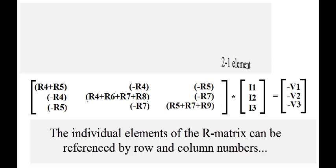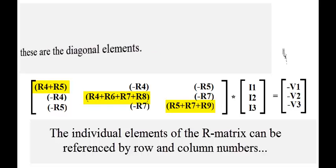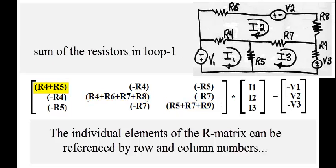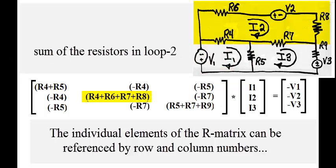This is the 2,1 element. This is the 2,2 element. These are the diagonal elements. Sum of the resistors in loop 1. This is the sum of the resistors in loop 2. This is the sum of the resistors in loop 3.